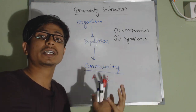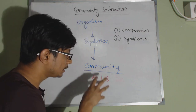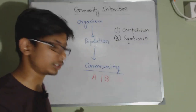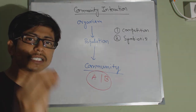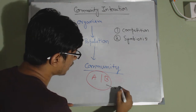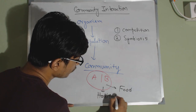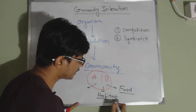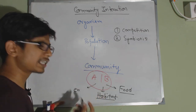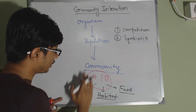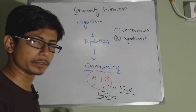Competition is the direct involvement of communities to fight against each other — community A will fight against community B. Why would they fight? Due to the availability of resources. Community A and community B require a similar type of resource, for example the same type of food source or habitat, and habitat and food are the major things where competition arises between two communities.